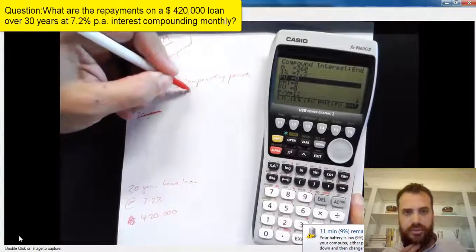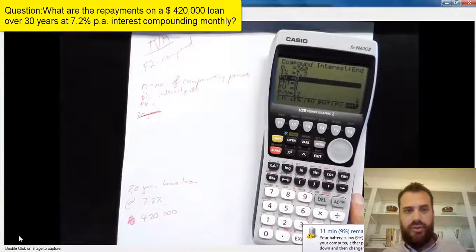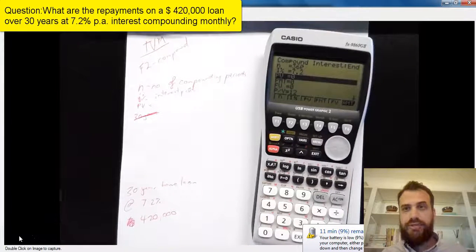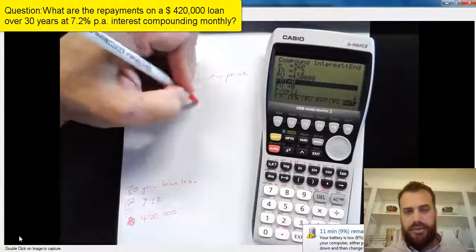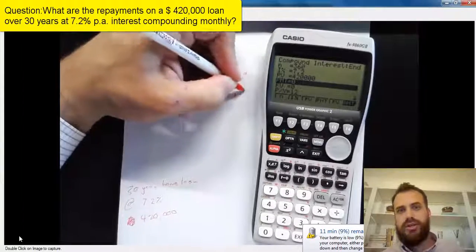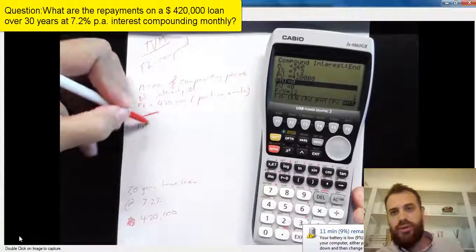Now, our home loan is going to be $420,000. That's our present value. We put that in as a positive number because it's money that came in to us. So $420,000, that's the present value of the loan.